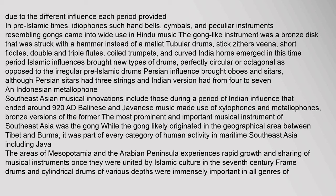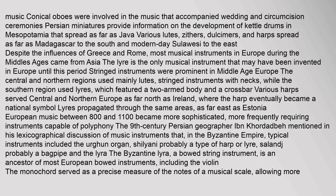Southeast Asian musical innovations include those during a period of Indian influence that ended around 920 AD. Balinese and Javanese music made use of xylophones and metallophones. The most prominent and important musical instrument of Southeast Asia was the gong, which likely originated in the geographical area between Tibet and Burma. The areas of Mesopotamia and the Arabian Peninsula experienced rapid growth and sharing of musical instruments once united by Islamic culture in the 7th century. Frame drums and cylindrical drums of various depths were immensely important in all genres of music. Various lutes, zithers, dulcimers, and harps spread as far as Madagascar to the south and modern-day Sulawesi to the east.